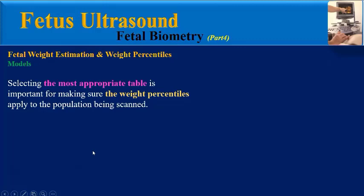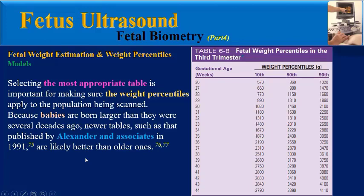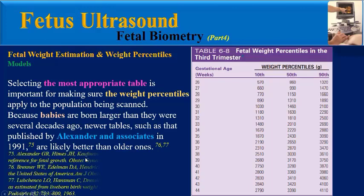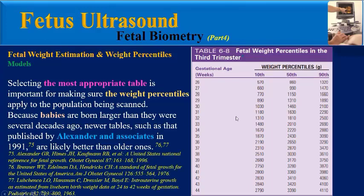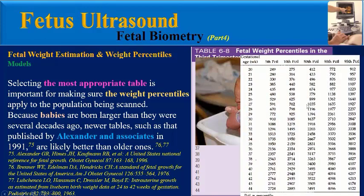Selecting the most appropriate table is important for ensuring that weight percentiles apply to the population being scanned. Because babies are born larger than they were several decades ago, newer tables such as that published by Alexander and Associates in 1991 are likely better than older ones, but are specific to American babies and cannot be generalized.